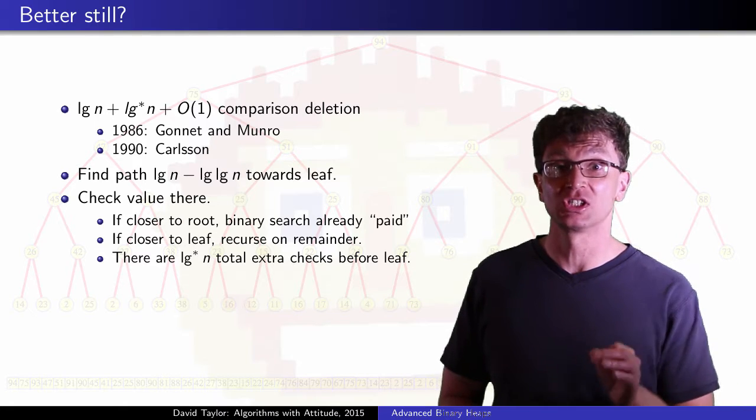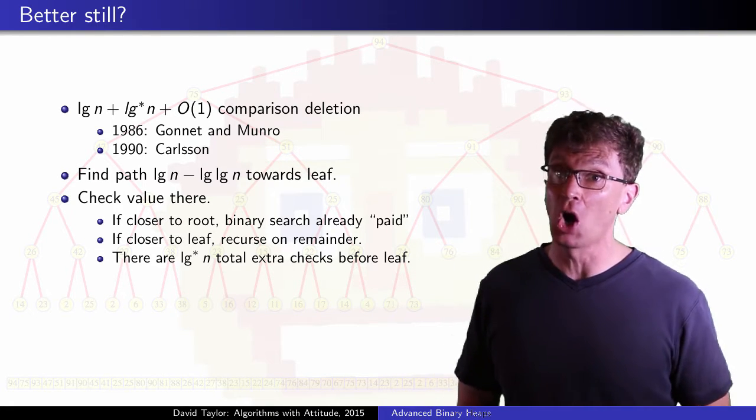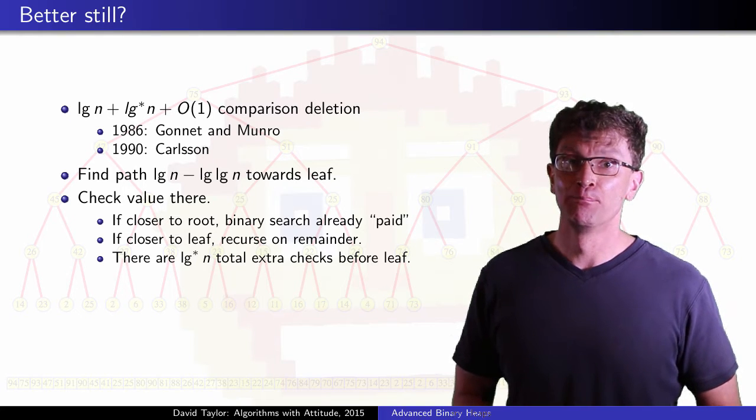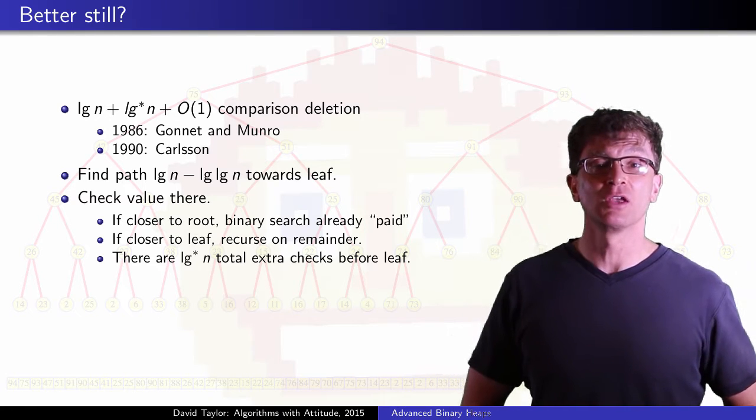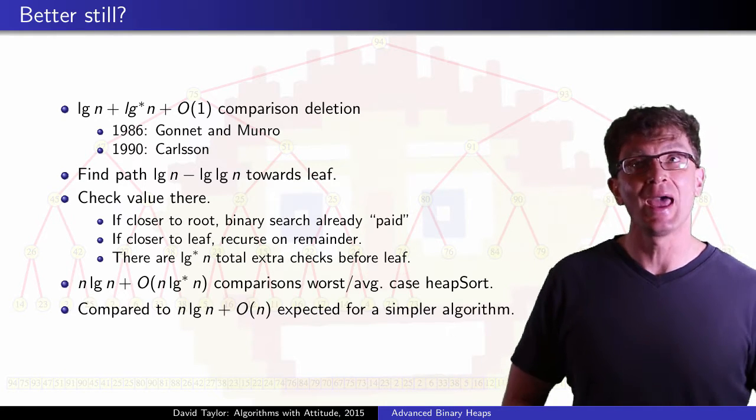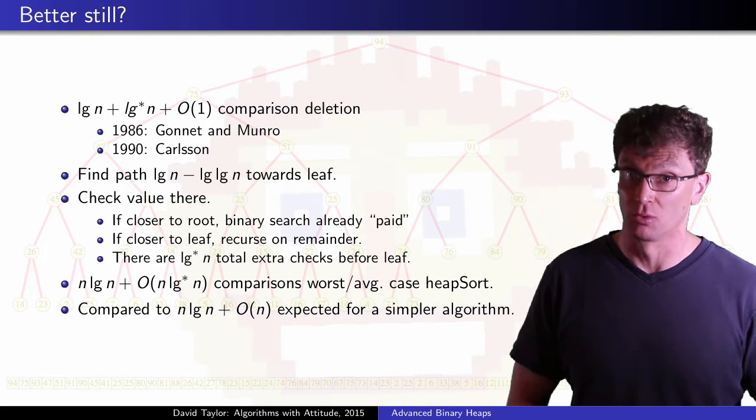This gives you a few extra checks to get down to the leaf, a total of log star n of them in the worst case, but your binary search is essentially already paid for. This will give you an n log n plus order n log star n comparison worst and average case heapsort.